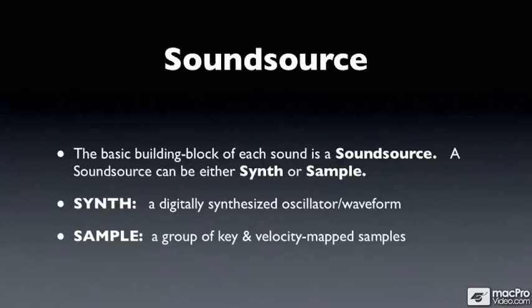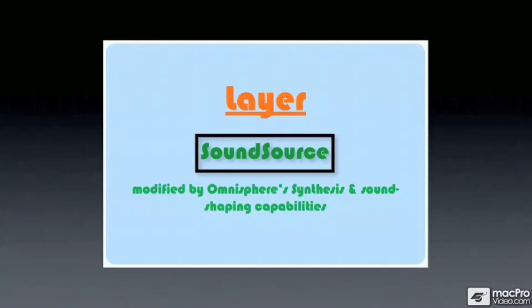The next level is something called the layer. Each sound source is the starting point for sounds in the layer. The layer contains all of Omnisphere's synthesis, sound shaping, and modulation capabilities. The sound source is completely transformed by the synthesis engine in each layer.